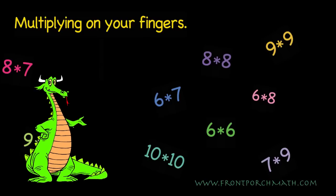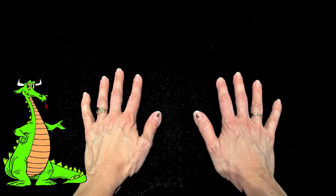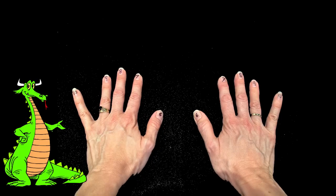The first step would be to number your fingers. The thumbs represent 6. The next fingers are 7, 8, 9, and 10 represented by the pinkies.